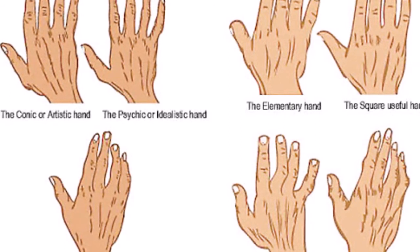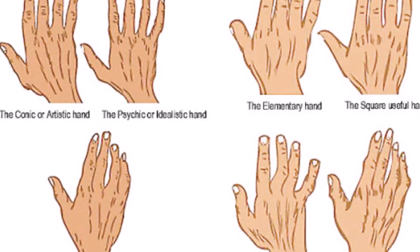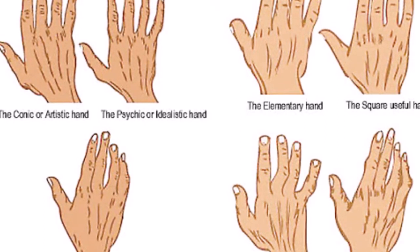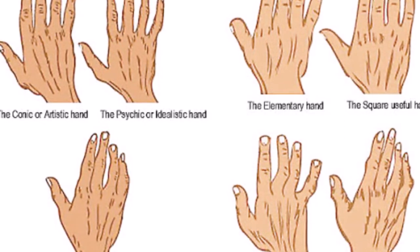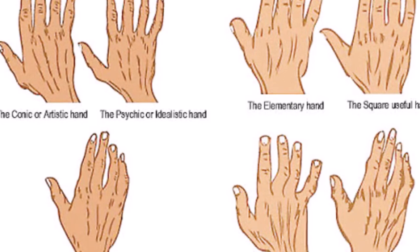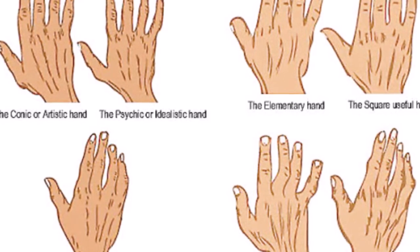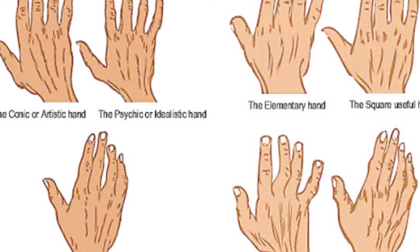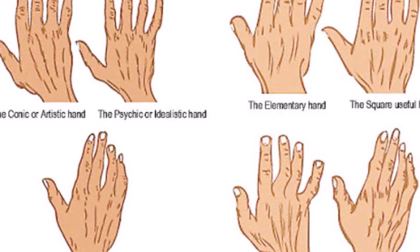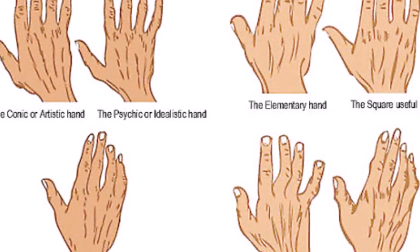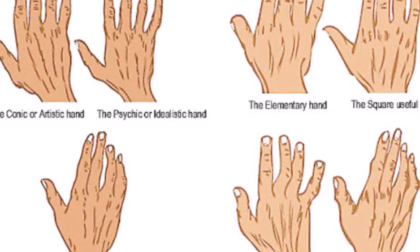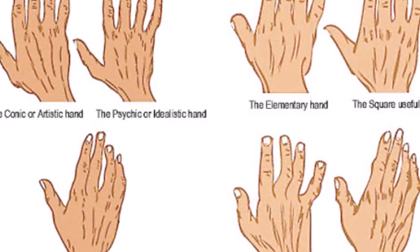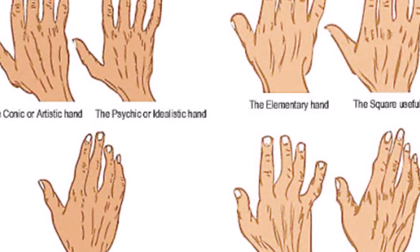So the first one is the elementary or the lowest type. The second kind of the hand is the square or the useful hand. The third one is the spatulate or nervous active type. The fourth one is the philosophical or jointed hand.